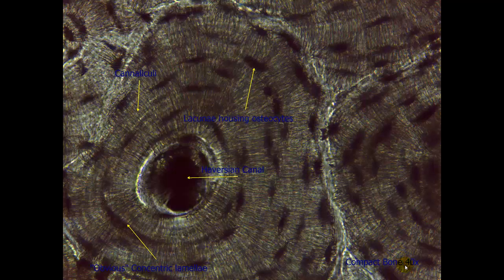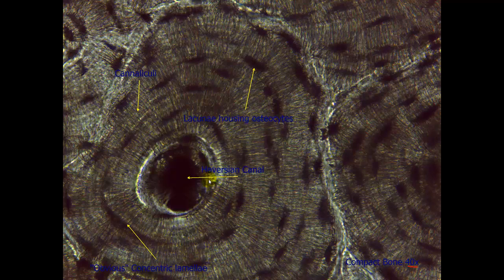Here is a 40x magnification of that same slide. Here is our haversion canal. Here is our lacunae. These are the black spots. We also have these rings that go around in circles. That gives it that bullseye look. Those are called concentric lamellae. And then we also have these little lines that are going in this direction. Those are actual spaces that we call canaliculi. These concentric lamellae and canaliculi allow the cells to exchange materials through the fluid that passes in these spaces.